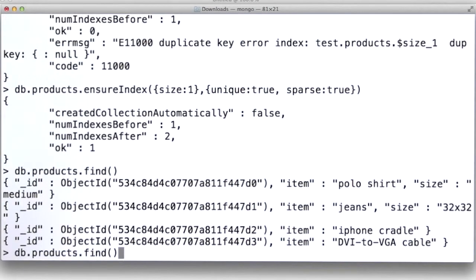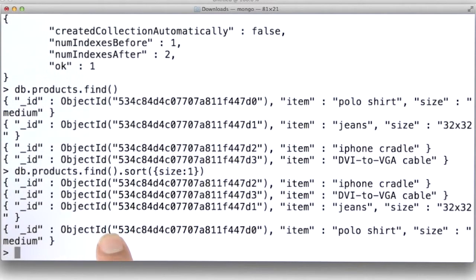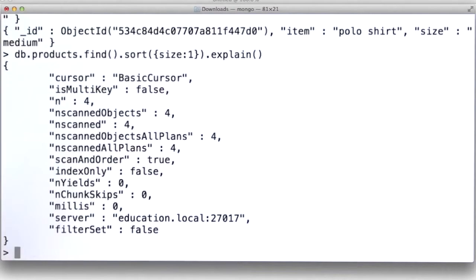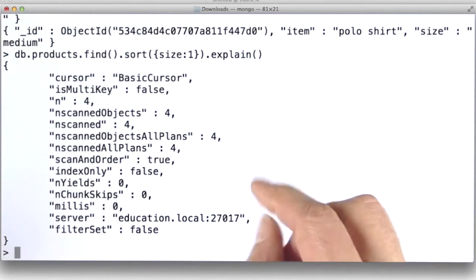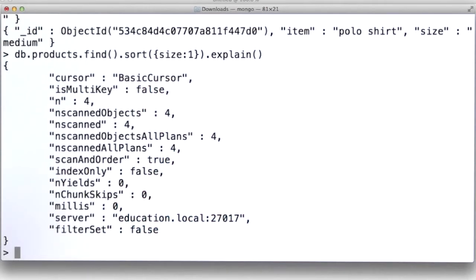But let's say we called db.products.find and said sort on size ascending. If we did that, then we still get all four documents back sorted by size. That's interesting. That's good. But let's see what index it's using. I'm going to use an explain on this and see what it says. It says that it's using a basic cursor for the index. So that's the reason why we're getting all the documents back.